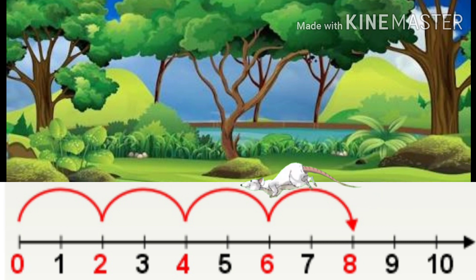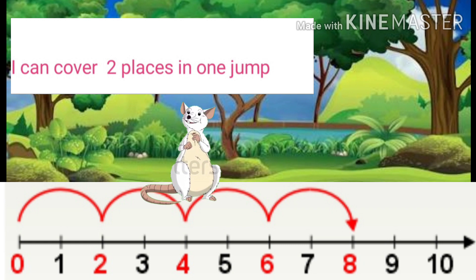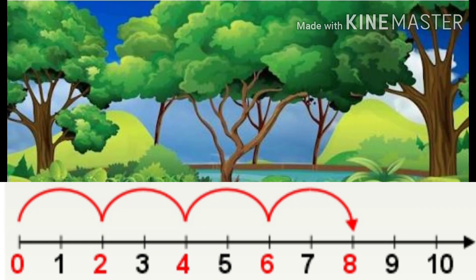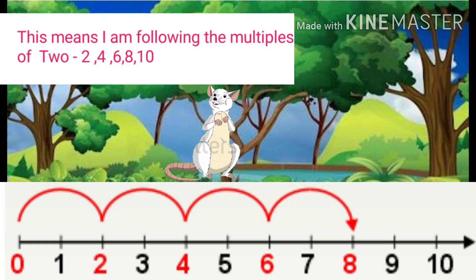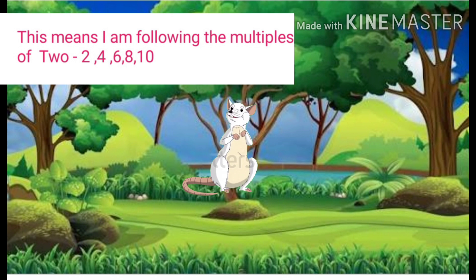Yay, I am enjoying! Hooray, I can cover two places in one jump. That's great! This means I am following the multiples of two: two, four, six, eight, and ten.